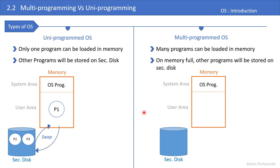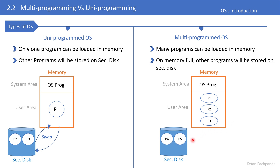In the multiprogrammed environment, in the user area I load process P1, and assuming there is space available, I can also load process P2, P3, and so on until the memory becomes full. Once memory is full, processes P4 and P5 will reside in the secondary disk. That is what we call multiprogramming, or the multiprogrammed operating system.